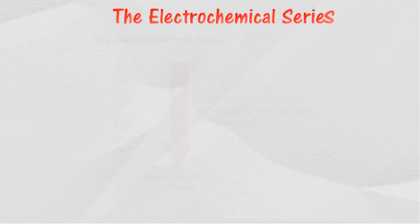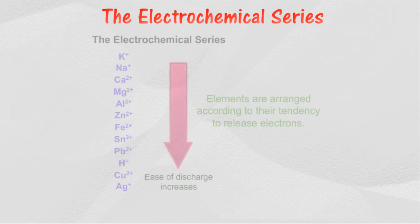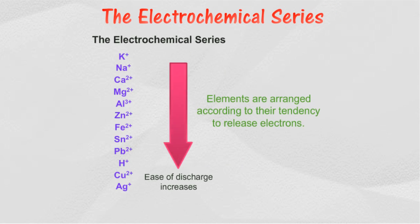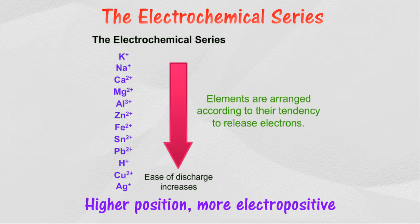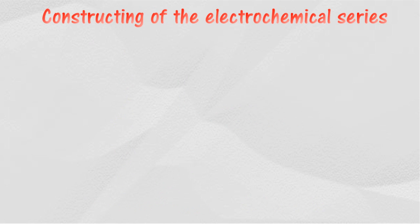The electrochemical series is a series of elements arranged according to the order of decreasing tendency to release electrons. Elements located at the upper part of the electrochemical series are more electropositive and have higher tendencies to release electrons to form positive ions. For example, sodium is more electropositive than silver.